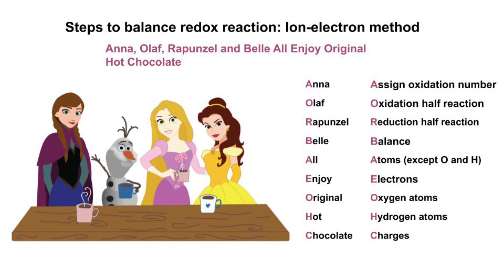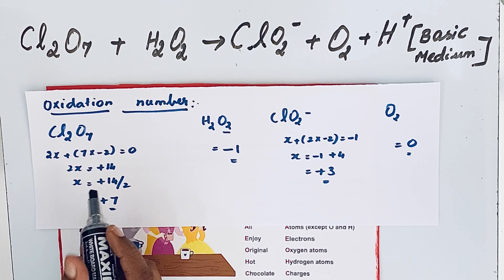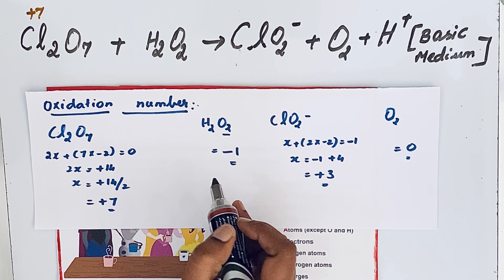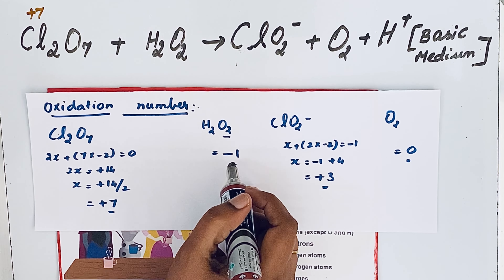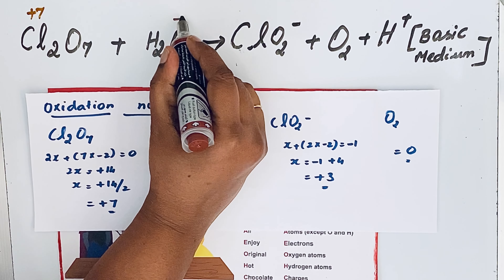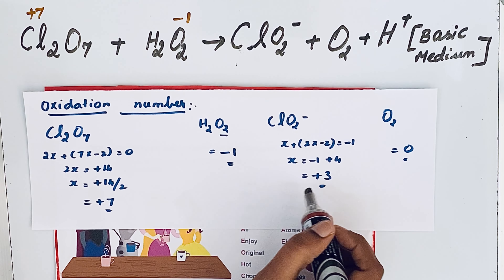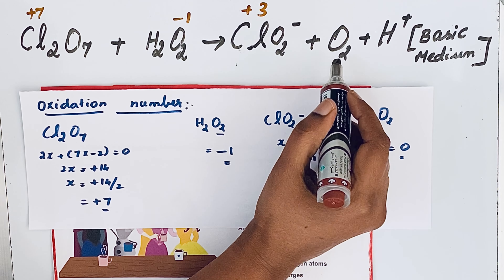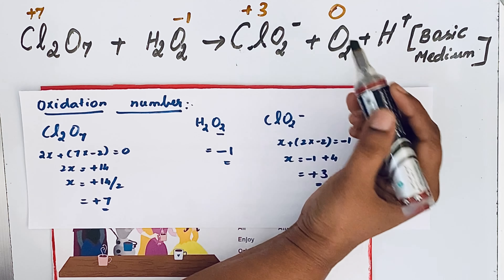The first step is to find oxidation numbers. In Cl₂O₇, the oxidation number of chlorine is +7. In H₂O₂, it is a peroxide, so the oxidation number of oxygen is -1. In ClO₂⁻, the oxidation number of chlorine is +3. Oxygen in its uncombined natural state has an oxidation number of zero.